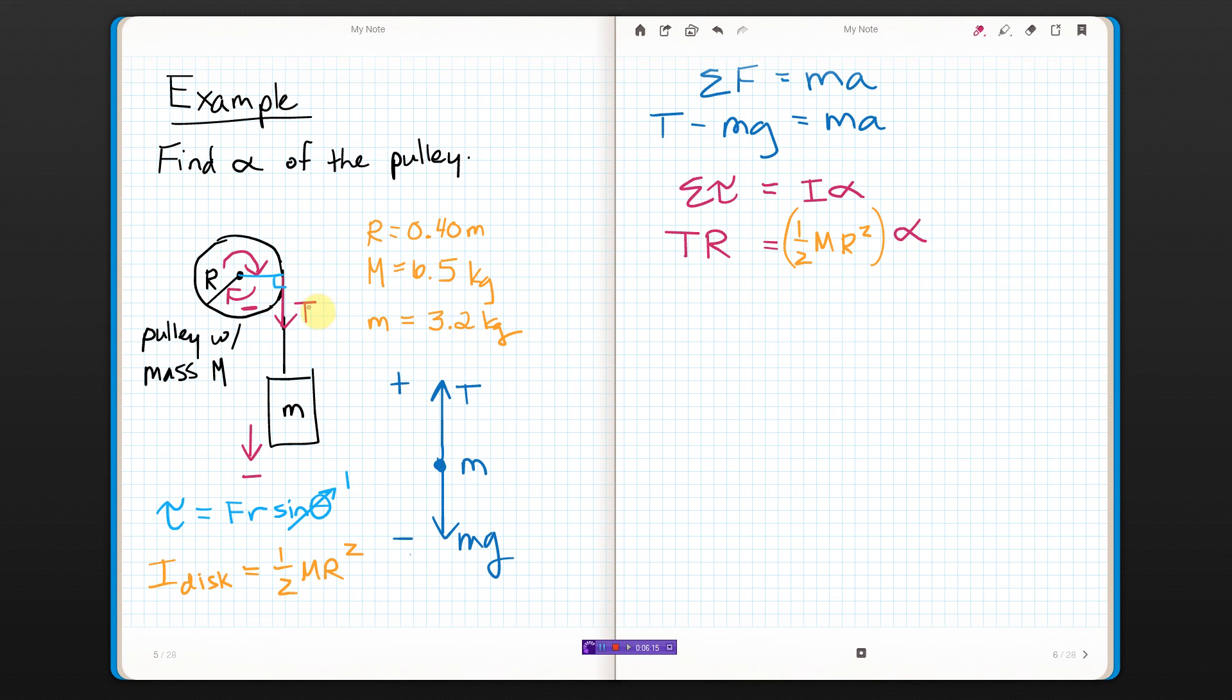Now remember the signs thing? So I forgot to put the negative on here. It needs to go right here. That torque should have been negative. I don't want to go back and edit this, so we're just pushing forward.